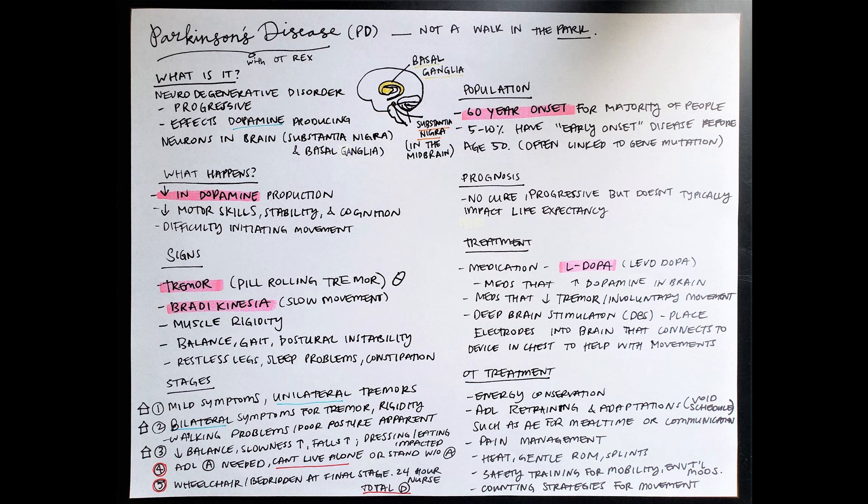So when we get to the mid-stage, we're at stage three now. We're still living at home by ourself, but our balance is decreasing, our slowness is increasing, and our fall risk is increasing as well. So this is when eating and dressing typically start to get more impacted.